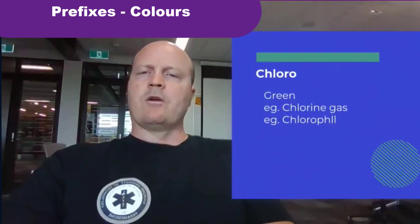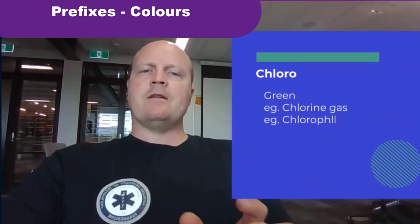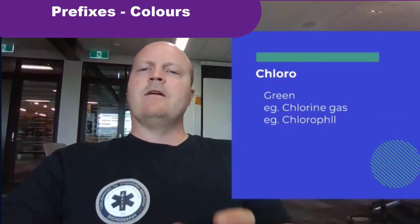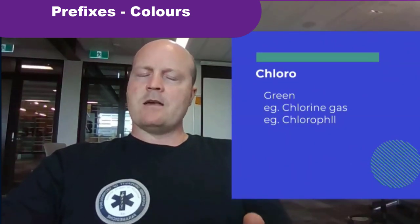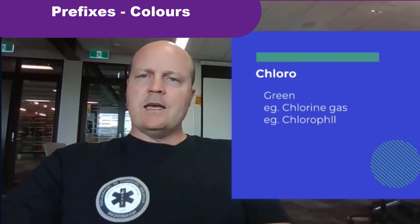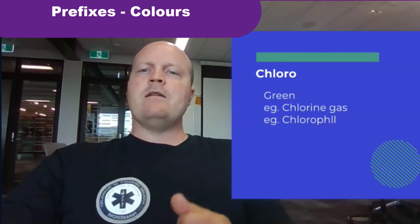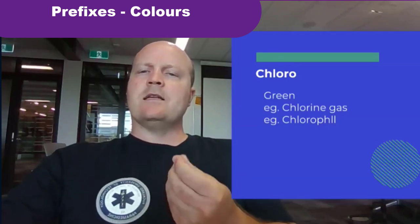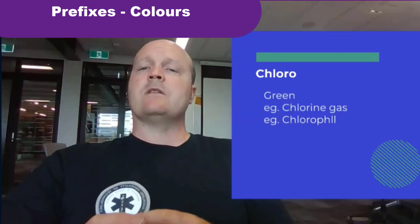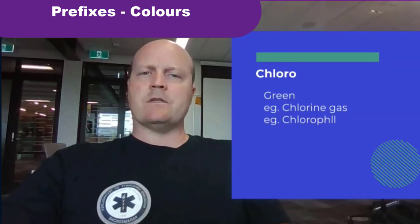'Chloro' means green. If you look at chlorine gas, that's a green gas, and chlorophyll is the green thing inside plants that gives the leaves their greenish tinge.